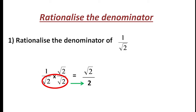We multiply and divide, writing the numerator with the numerator and the denominator with the denominator. After multiplying, the denominator no longer has a radical sign — the radical is removed from the denominator.